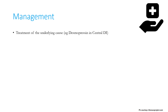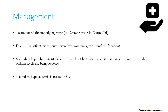Treatment of the underlying cause is most important — for example, desmopressin for central diabetes insipidus, dialysis for acute severe hypernatremia with renal dysfunction. Secondary hyperglycemia developing in hypernatremia need not be treated since it helps maintain osmolality while sodium levels are being lowered. Dextrose concentrations should be lowered gradually (e.g., from 5% to 2.5%) to avoid cerebral edema, and insulin is not needed for secondary hyperglycemia in hypernatremia.